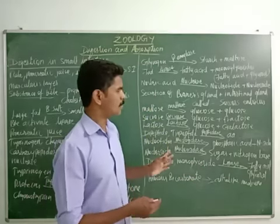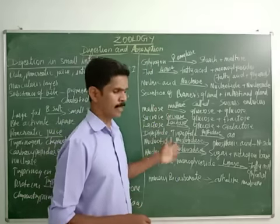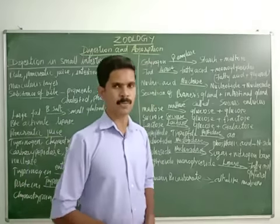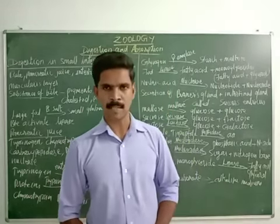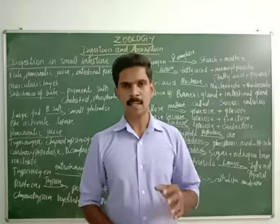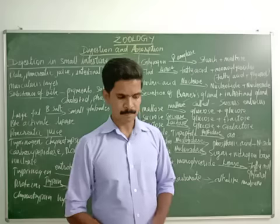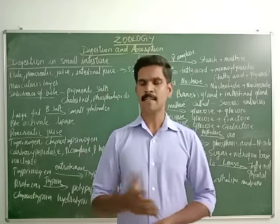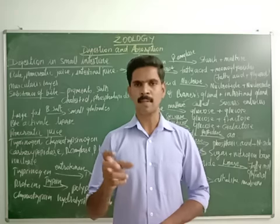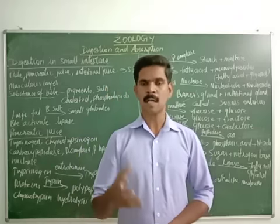Now we have studied about different types of enzymes — their names and functions. The mucus and bicarbonate present in the intestinal juice provide an alkaline medium for the activity of enzymes. For the effective functioning of the enzymes, the enzymes need an alkaline medium, which is given by the mucus and bicarbonate present in the intestinal juice. At the end of the digestion process, all the macromolecules — large-sized molecules — are converted into simple molecules, which are then absorbed by the cells.